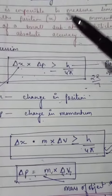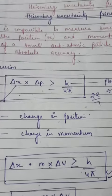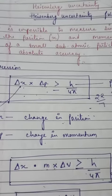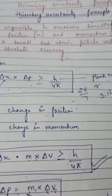So Heisenberg Uncertainty Principle, once again I am going to repeat, it is impossible to measure simultaneously the position and momentum of a subatomic particle with absolute accuracy.